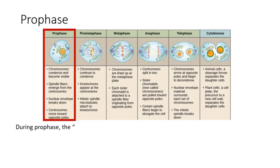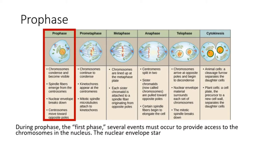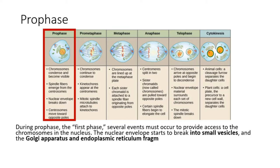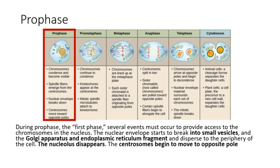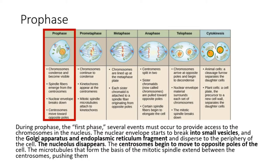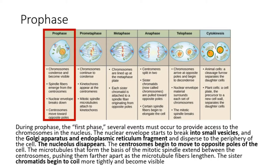During prophase, the first phase, several events must occur to provide access to the chromosomes in the nucleus. The nuclear envelope starts to break into small vesicles, and the Golgi apparatus and endoplasmic reticulum fragment and disperse to the periphery of the cell. The nucleolus disappears. The centrosomes begin to move to opposite poles of the cell. The microtubules that form the basis of the mitotic spindle extend between the centrosomes, pushing them farther apart as the microtubule fibers lengthen. The sister chromatids begin to coil more tightly.